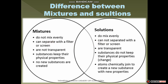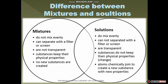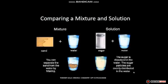Mixtures do not mix evenly. For example, some amount of sand particles are present at the bottom of the glass, and there are no sand particles present above the water level. In a homogeneous mixture, when water is mixed with sugar, the sugar is evenly distributed in the water. So sand is unevenly distributed, while sugar is evenly distributed.